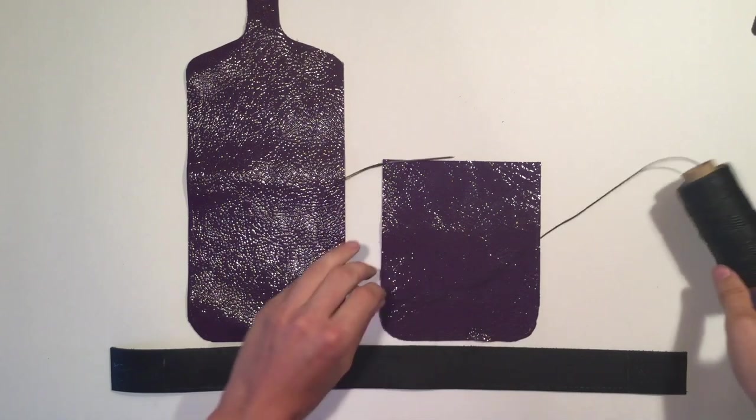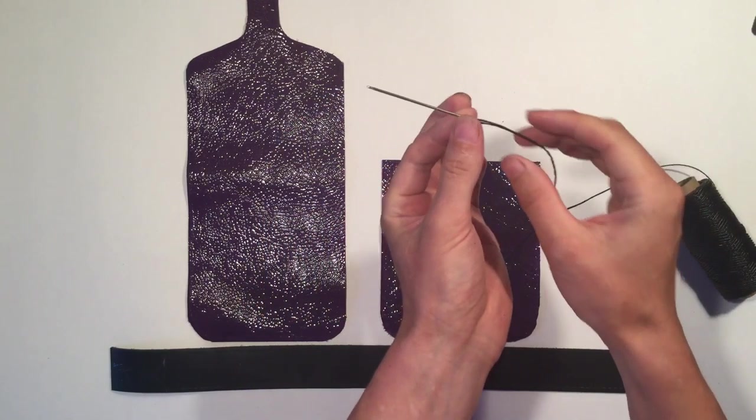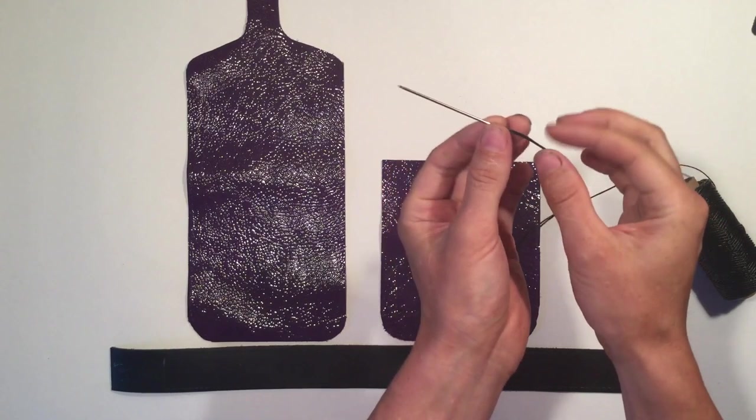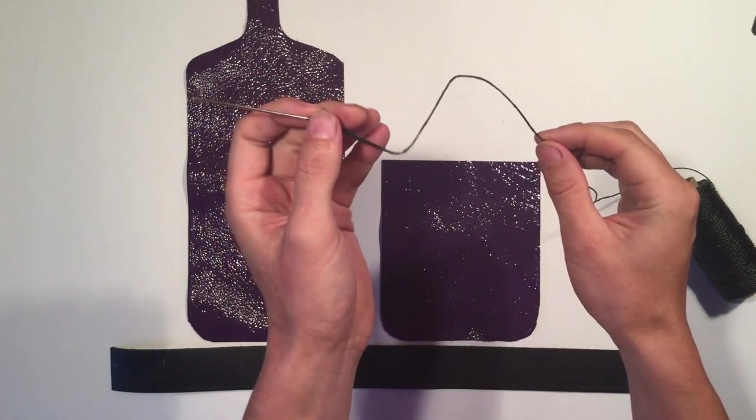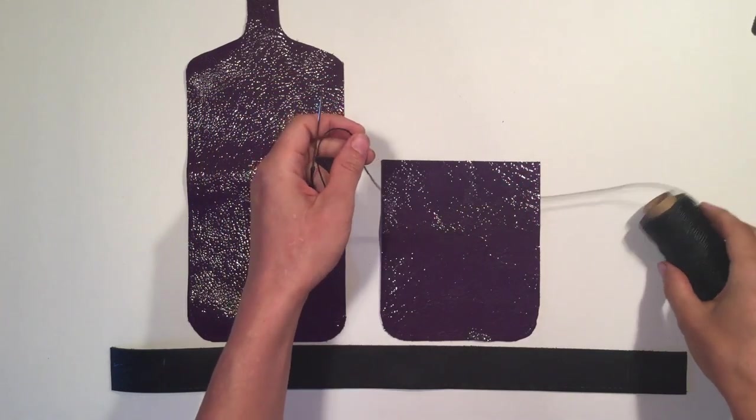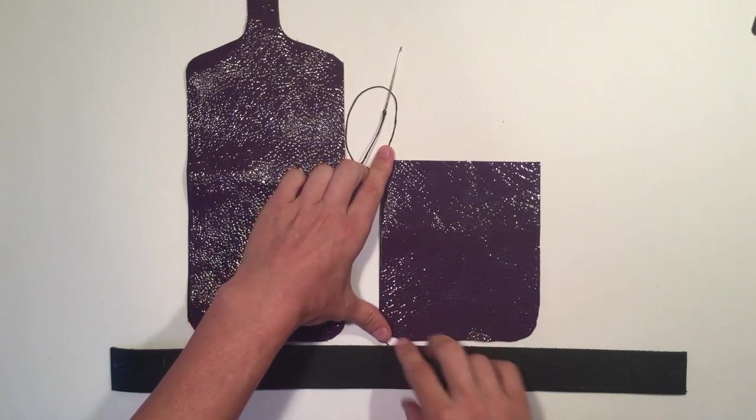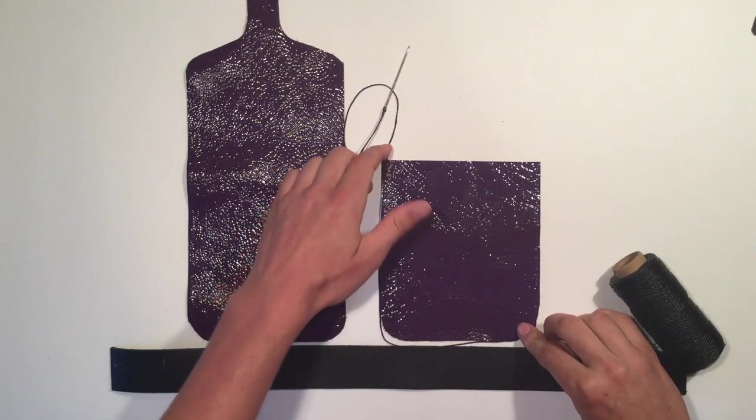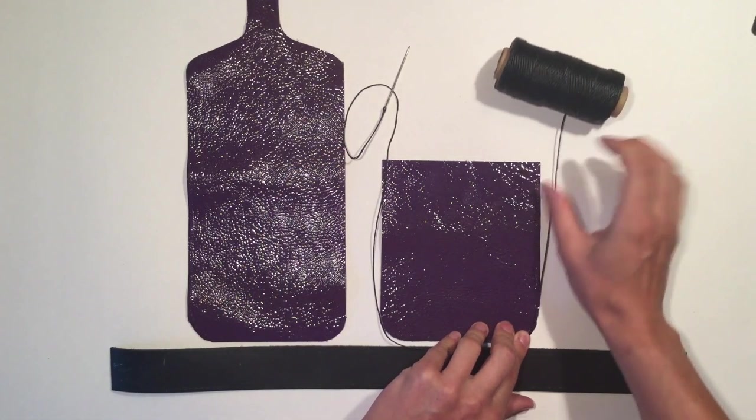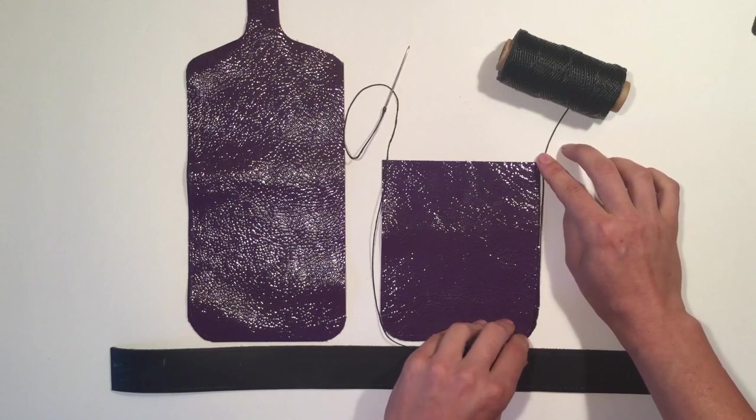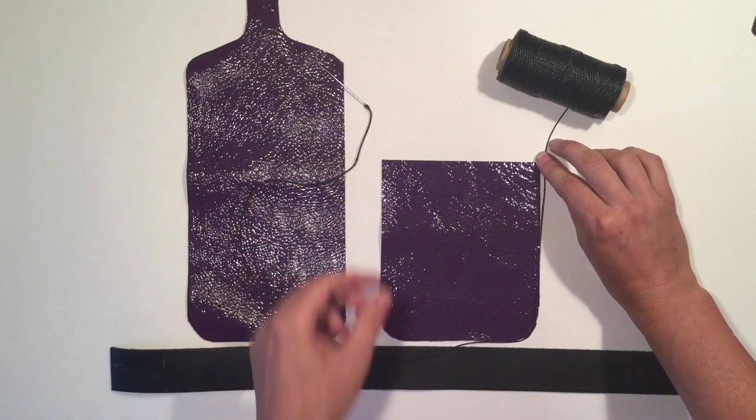So you're going to want enough thread so that you can pull through your needle. You're going to want enough thread so you can pull your needle through the leather. And then you're going to want enough thread to go all the way around your perimeter. So I'm just laying my thread around. So that's the length we need for one side. But since we're doing a double needle, we're going to need twice that distance.